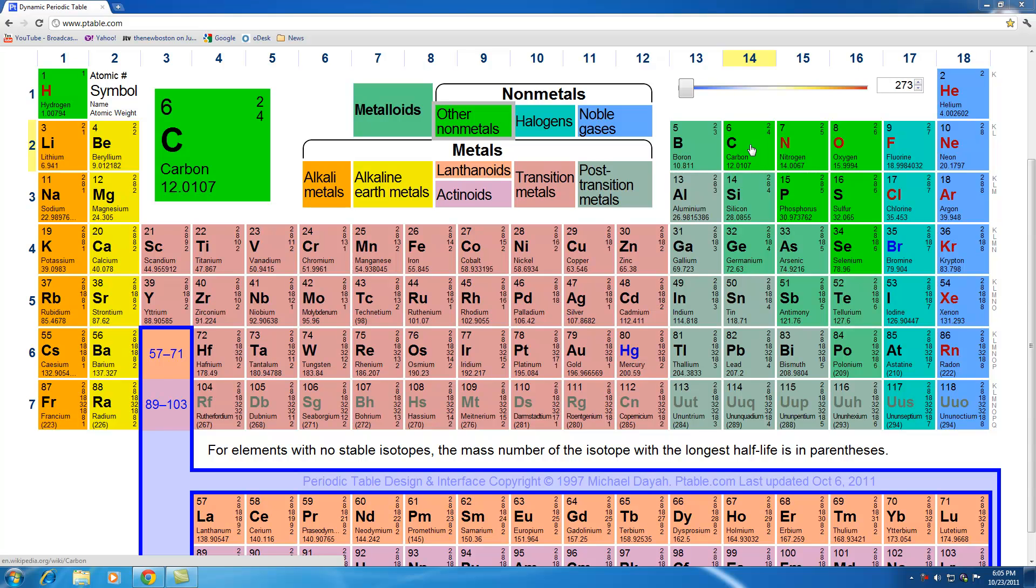Now I talked to you guys about atomic mass before and I said it was the protons plus the neutrons. So why these numbers aren't even is it's actually the average of all the naturally occurring isotopes. So they took all the carbons, carbon-14, carbon-12, and they averaged them all together.